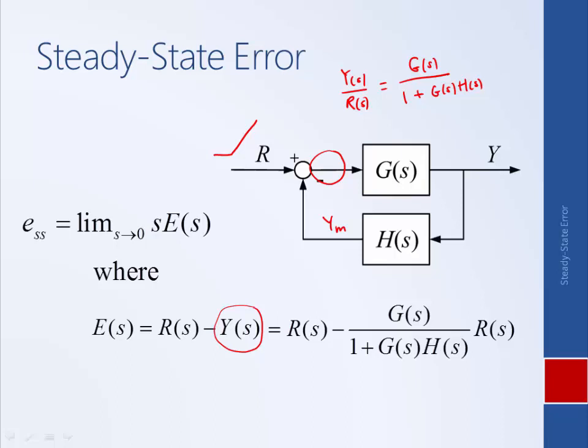So you could imagine a situation where R is a ramp and maybe Y is growing to infinity, but it's growing to infinity at a different rate. And so the difference between the two, the error, is getting larger and larger and larger.